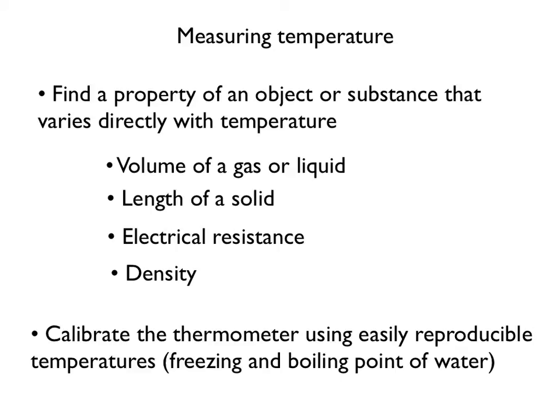Once we find a property that is directly proportional to temperature, we can build a thermometer by using easily reproducible temperatures, such as the freezing point and boiling point of water, to mark these two temperatures on our thermometer. Since we have hopefully chosen a property that is directly proportional, we can then interpolate between these two points to mark a scale on our thermometer. This process is called calibrating the thermometer.